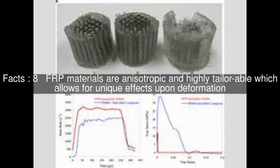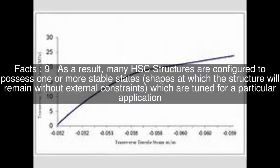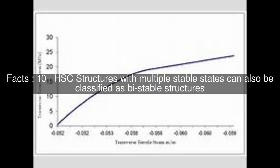FRP materials are anisotropic and highly tailorable, which allows for unique effects upon deformation. As a result, many HSC structures are configured to possess one or more stable states — shapes at which the structure will remain without external constraints — which are tuned for a particular application. HSC structures with multiple stable states can also be classified as bistable structures.